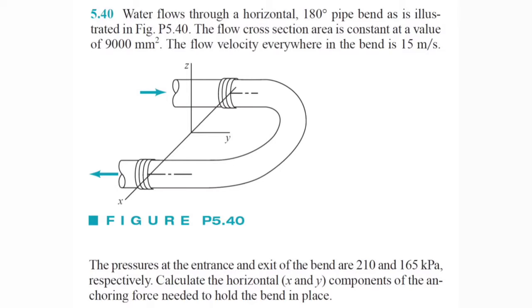Alright, so we're going back to linear momentum. This problem reads, water flows through a horizontal 180 degree pipe bend. The flow cross-section area is a constant value of 9,000 millimeters squared. The flow velocity everywhere in the bend is 15 meters per second.